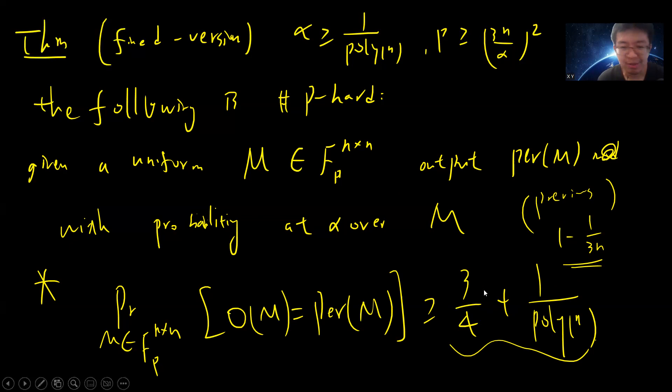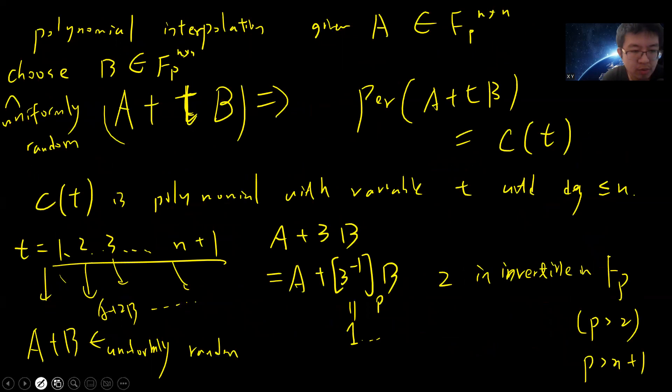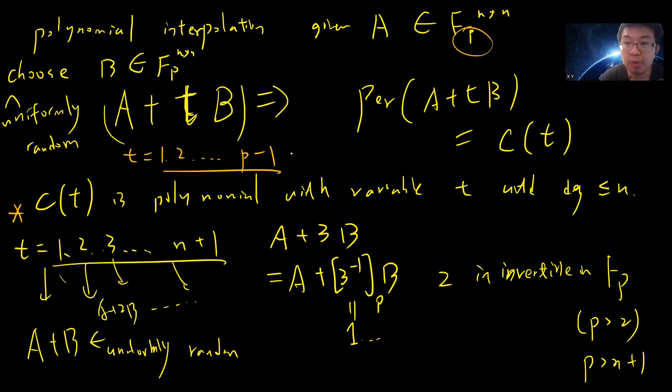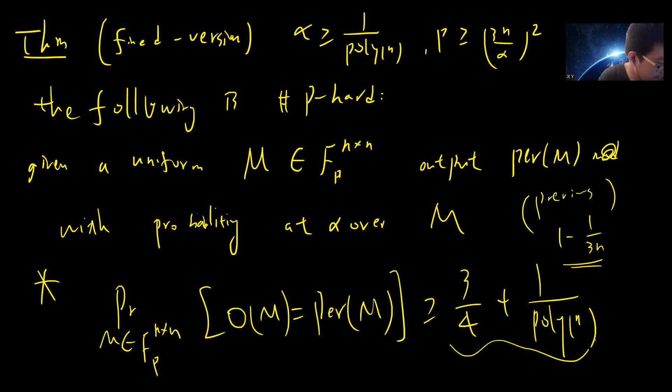The key idea is that in the previous proof we used t from 1 to n plus 1, but in this video, because the prime p is very large, we can use t equals 1 to p minus 1. So now we have many more points. Since we have more points, we can do a much weaker polynomial interpolation.